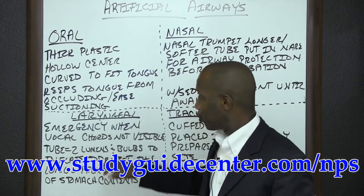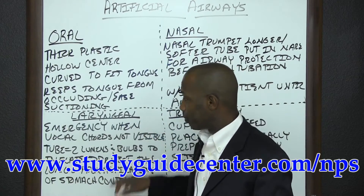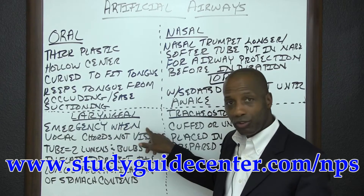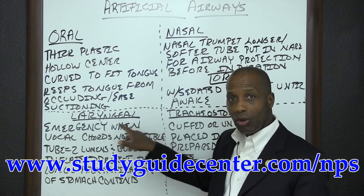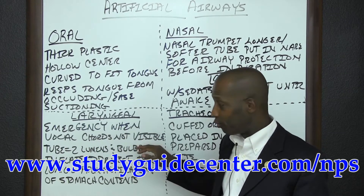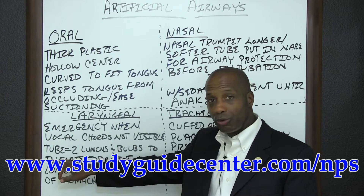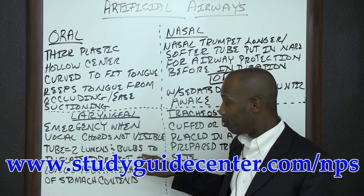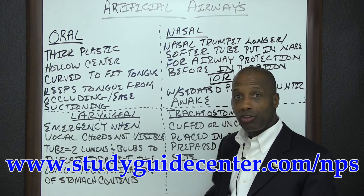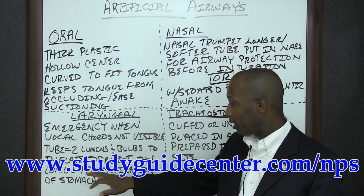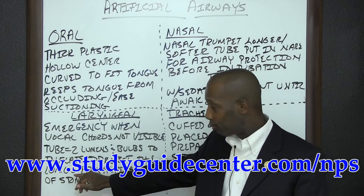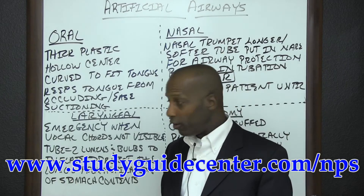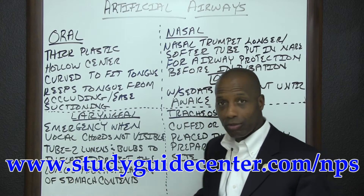Laryngeal artificial airways are employed in emergency situations when the vocal cords are not visible. The device has two lumens along with two bulbs to inflate, to protect the lungs from aspiration of the stomach contents.